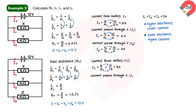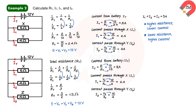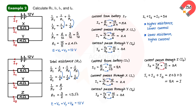The current through resistor X is calculated by substituting V_X equals 12 and R_X equals 6, giving I_1 equals 2 amperes. The current through resistor Y is calculated by substituting V_Y equals 12 and R_Y equals 4, giving I_2 equals 3 amperes. The current through resistor Z is calculated by substituting V_Z equals 12 and R_Z equals 4, giving I_3 equals 3 amperes. You see that I_1 plus I_2 plus I_3 equals 8 amperes equals I_T.